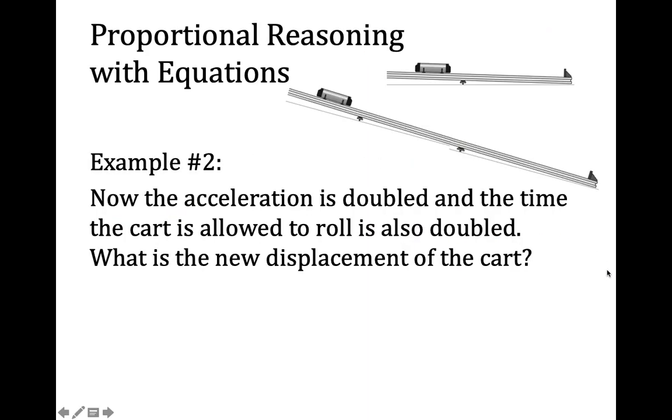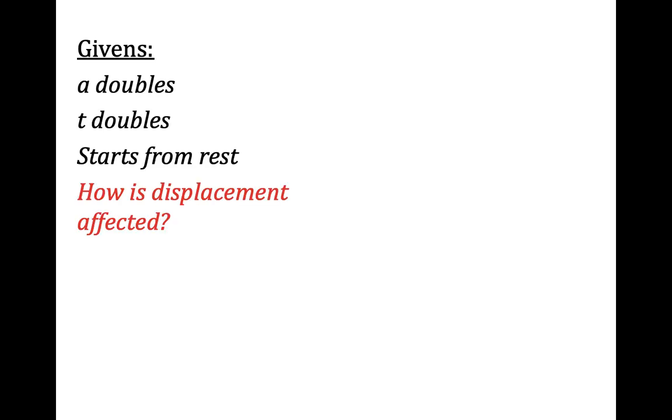Let's do example two. Now the acceleration is doubled and the time the cart is allowed to roll down the ramp is also doubled. What's the new displacement of the cart? So now I'm looking for how far the cart is going. I have two variables changing. Here are my givens: acceleration doubles, time doubles, starts from rest. How is the displacement affected is what I want to find out. And I don't care and I don't need final velocity.